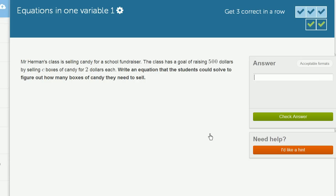Mr. Herman's class is selling candy for a school fundraiser. The class has a goal of raising $500 by selling C boxes of candy for $2 each. Write an equation that the students could solve to figure out how many boxes of candy they need to sell.